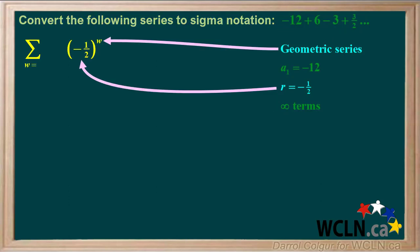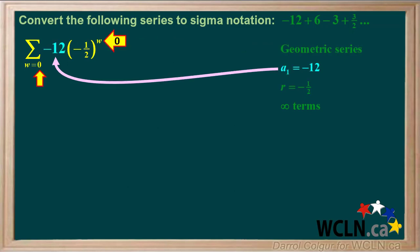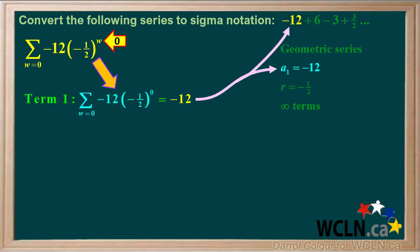Because we have a geometric series, we can write r to the power of an exponent, which we'll call w in this case. If we write negative 12 here and set w as 0 for term 1, one half to the power of 0 equals 1, and we get negative 12 times 1, or negative 12, which is the value for term 1.